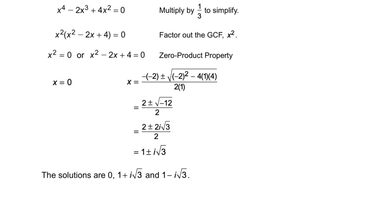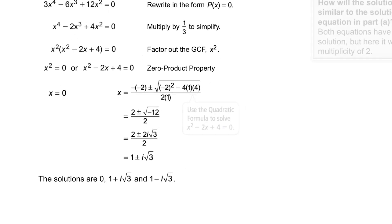So we can state the solutions are 0, 1 plus i times the square root of 3, and 1 minus i times the square root of 3.